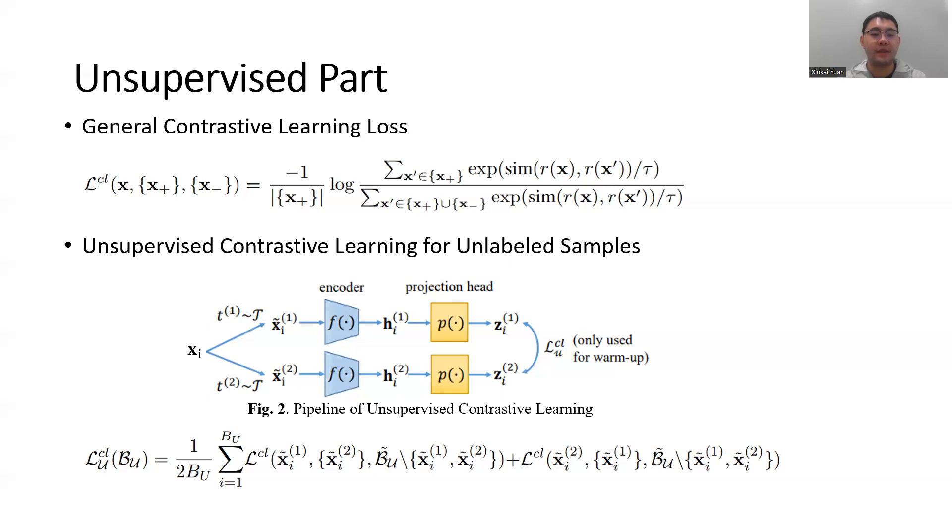As you can see, when the loss decreases, the numerator, which contains the representation distances between x and its positive samples, is supposed to decrease. And the denominator, which contains the representation distances between x and its negative samples, is supposed to increase.